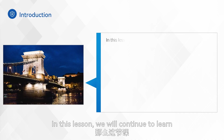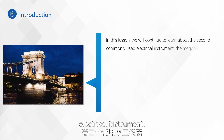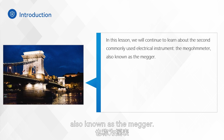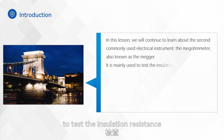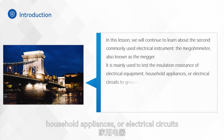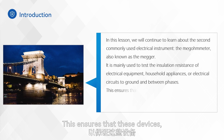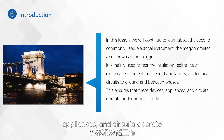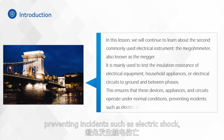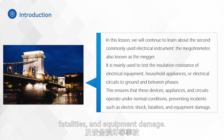In this lesson, we will continue to learn about the second commonly used electrical instrument, the megometer, also known as the mega. It is mainly used to test the insulation resistance of electrical equipment, household appliances, or electrical circuits to ground and between phases. This ensures that these devices, appliances, and circuits operate under normal conditions, preventing incidents such as electric shock, fatalities, and equipment damage.